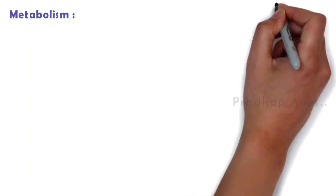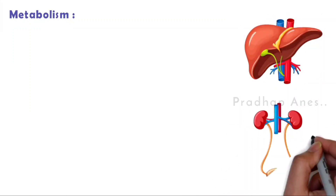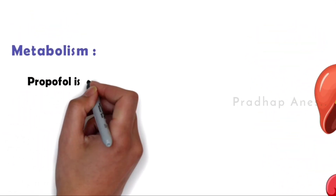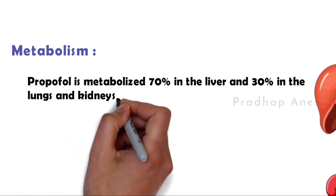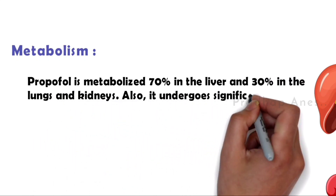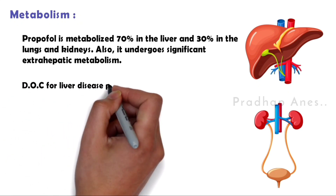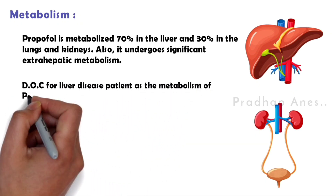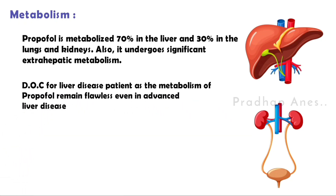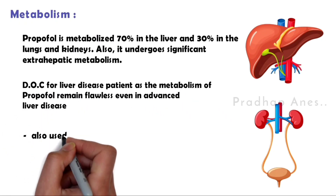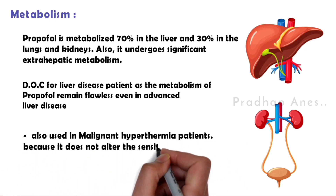Metabolism: Propofol is metabolized 70% in the liver and 30% in the lungs and kidneys. It also undergoes significant extrahepatic metabolism. It is a drug of choice for liver disease patients as the metabolism of propofol remains flawless even in advanced liver disease. Propofol is also used in malignant hyperthermia patients because it does not alter the sensitivity of muscles.